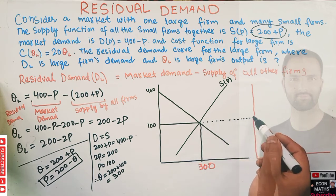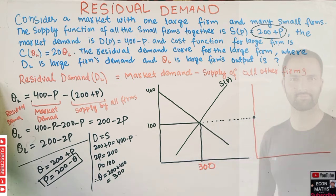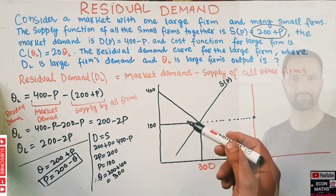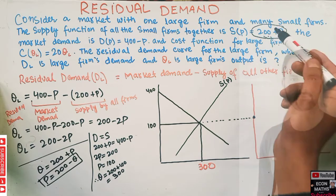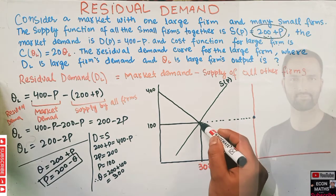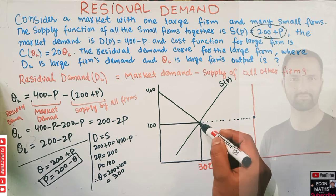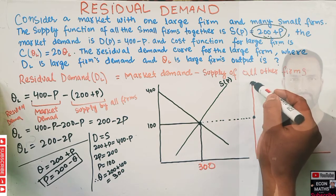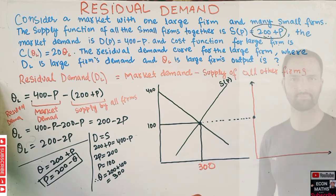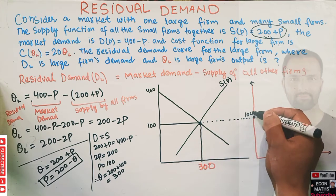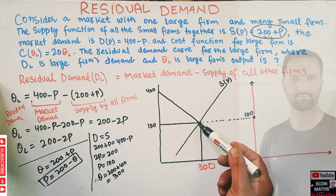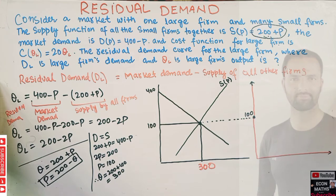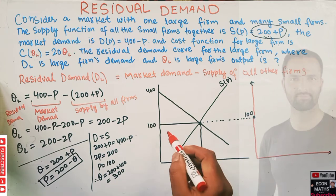When price equals 100, all the output is being supplied by the smaller firms, so the residual demand for the large firm equals zero at this point — because supply is exactly equal to demand.